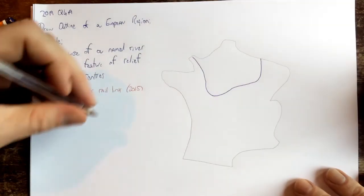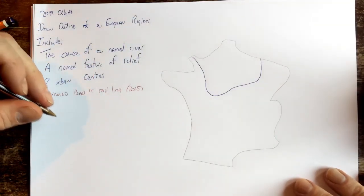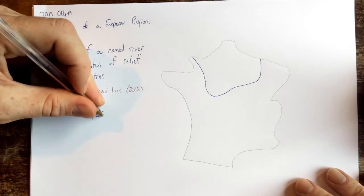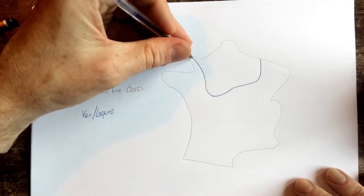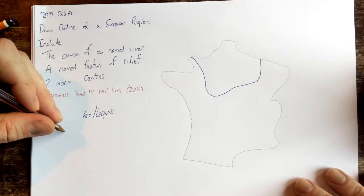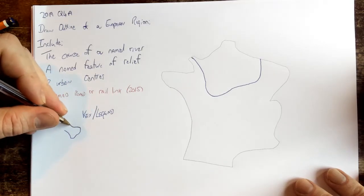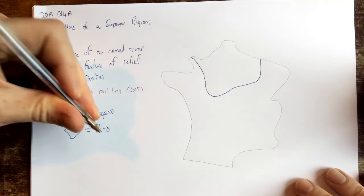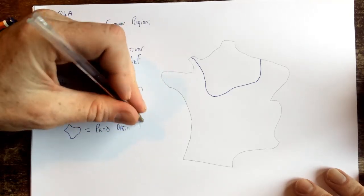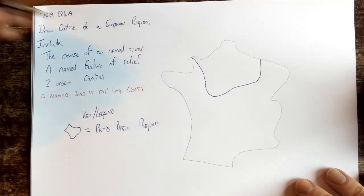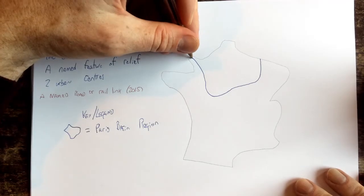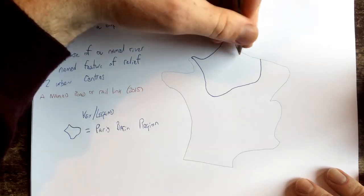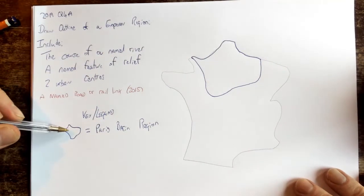Which is the Paris Basin. So the first thing I'll put in is my key or legend here. The first thing upon my key or legend is my outline of my region, looks a bit like that, equals Paris Basin region. So that's the outline of my region. Maybe I'll just cover it all in blue so we know that the region is that. And just make sure that you have your symbol, so that's my symbol: Paris Basin region.